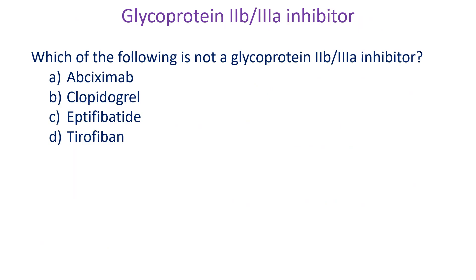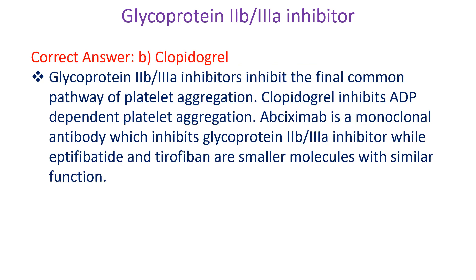Which of the following is not a glycoprotein 2b3a inhibitor? A. Abciximab. B. Clopidogrel. C. Eptifibatide. D. Tirofiban. Correct answer: B. Clopidogrel.